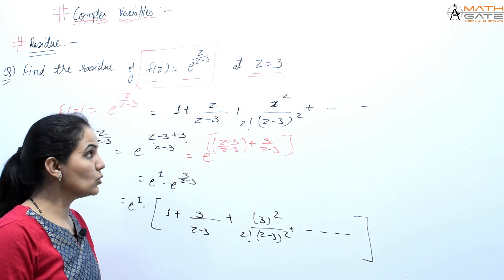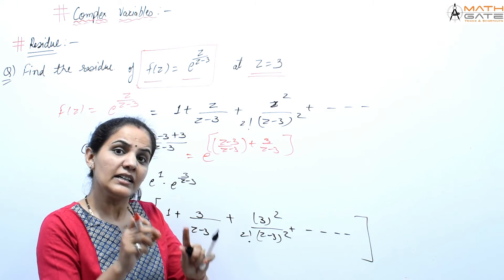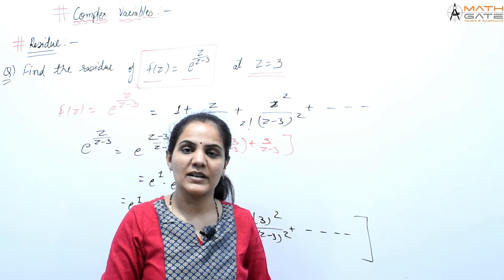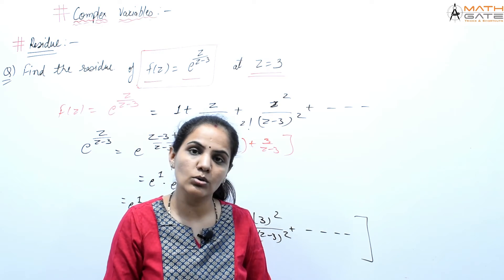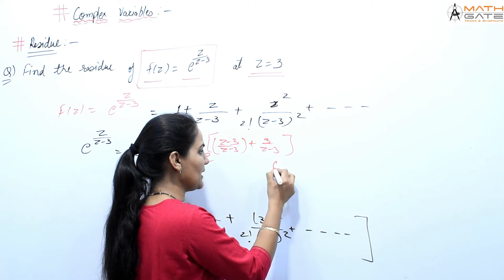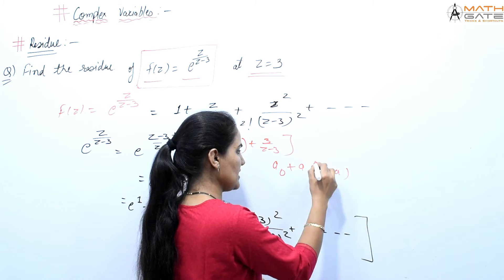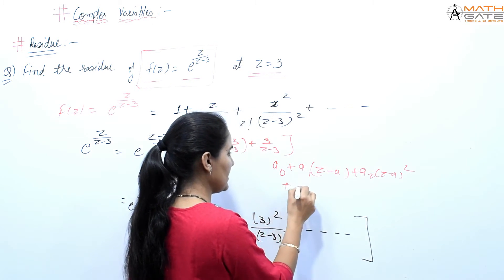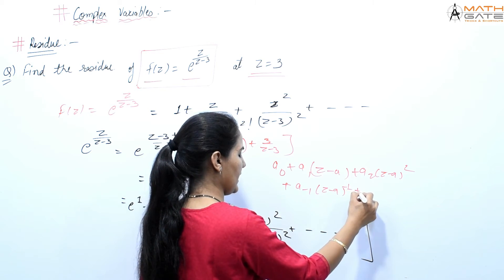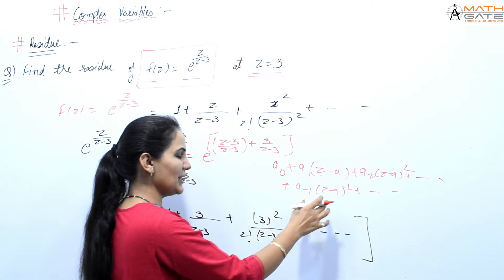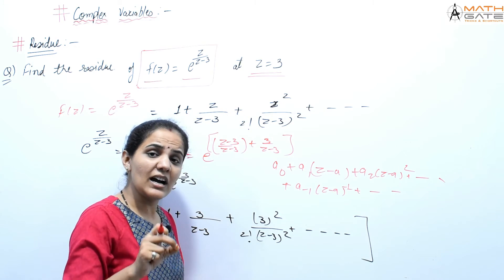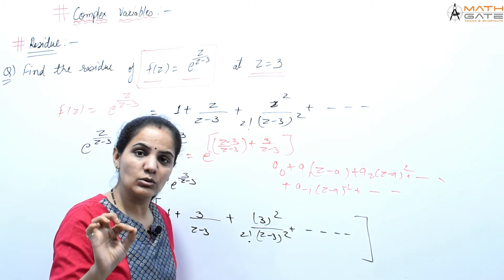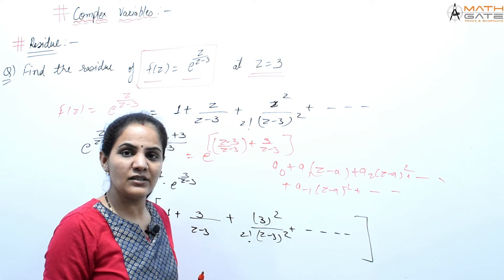The reason for this expansion is that residue is the coefficient of (z−a)^(−1) in the Laurent series. So by expanding in powers of (z−3), the coefficient of (z−3)^(−1) is clearly e³ × 1 = e³. Therefore the residue of f(z) = eᶻ/(z−3) at z = 3 is e³.